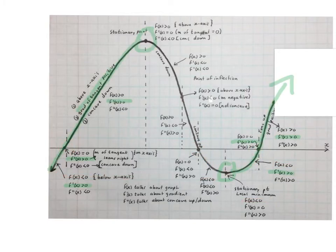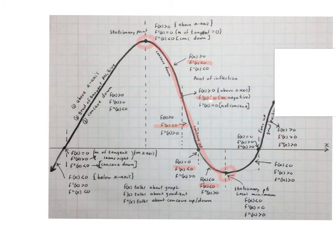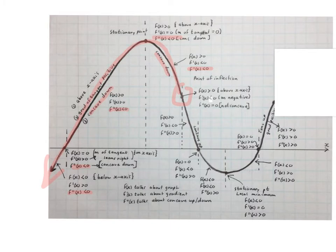Everywhere where the graph is green, the gradient is positive, and the writing in green tells us so. Everywhere where the graph is red, the gradient is negative, and the red writing tells us so. Everywhere where the graph is green, the graph is concave up, and the green writing tells us so. Everywhere where the graph is red, the graph is concave down, and the red writing tells us so. Please stop the video and take a screenshot of this if you want to summarize it for your level 3 and 4 questions in paper 1 and 2.